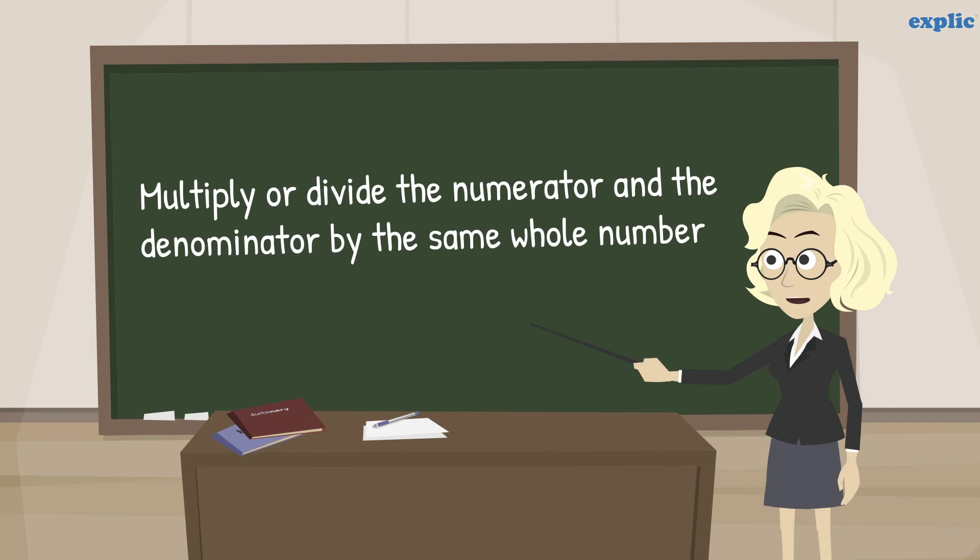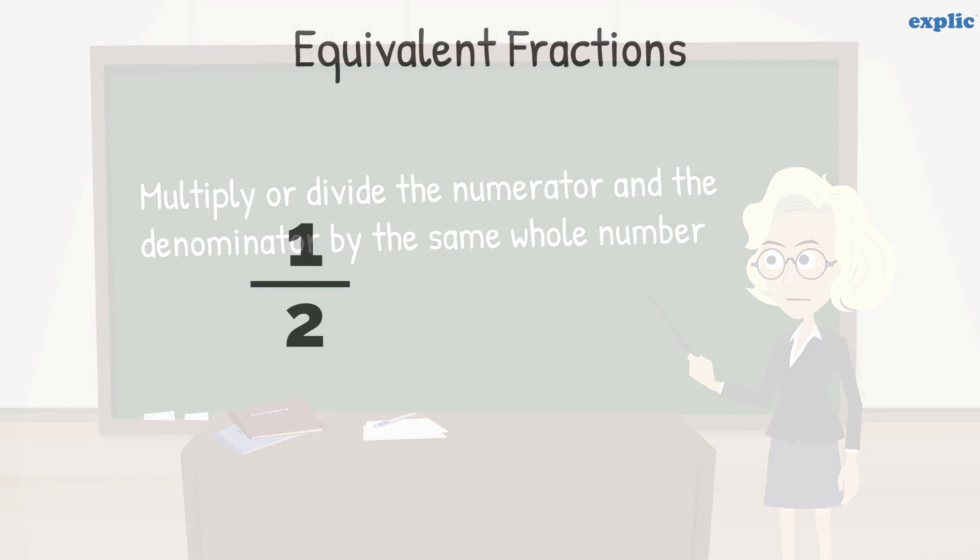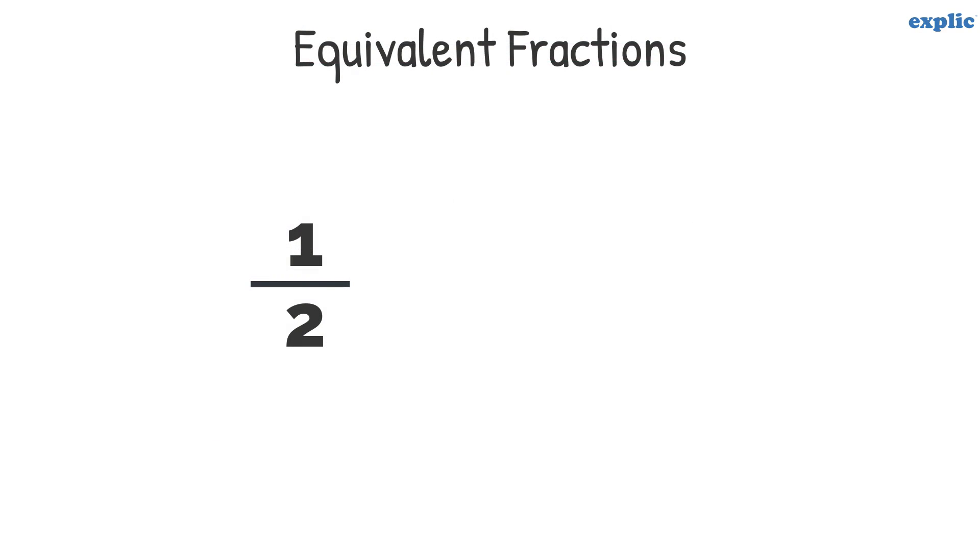You can easily find out the equivalent fractions by multiplying or dividing by the same number in the numerator and denominator. For example, to find out an equivalent fraction of 1 by 2, you can multiply numerator and denominator by 2. Hence 2 by 4 is the equivalent fraction of 1 by 2.